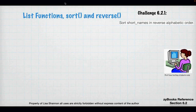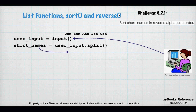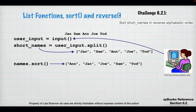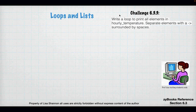Let's talk about sort and reverse. For challenge 6.21, sort the names in reverse alphabetical order. Input 'Jan, Sam, Ann, Joe, Todd', use the split function to get a five-element list, then call '.sort()' to sort alphabetically. If I want reverse sort, I call '.reverse()', and now the list is in reverse alphabetical order.